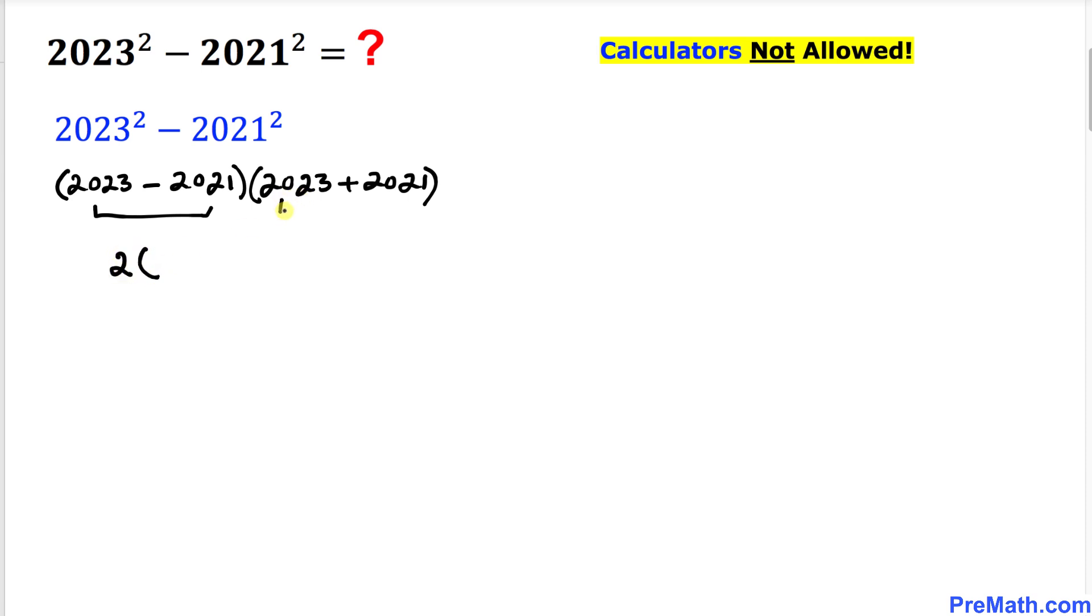then times this is going to give us 4044. Finally, 2 times 4044 is going to give us 8088, and that is our final answer.